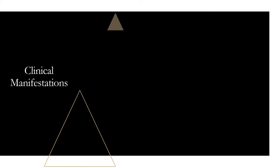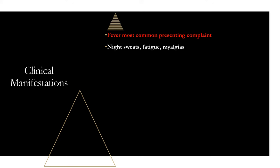Now let's go over clinical manifestations. There are common ones and rare ones — you need to know both for the boards. The most common presenting complaint is fever, seen in almost everyone. Keep in mind elderly or immunocompromised patients may present atypically without fever. Other common manifestations are constitutional symptoms: night sweats, fatigue, and myalgias. Everything else — including murmurs — is actually rare, but you still need to know them.